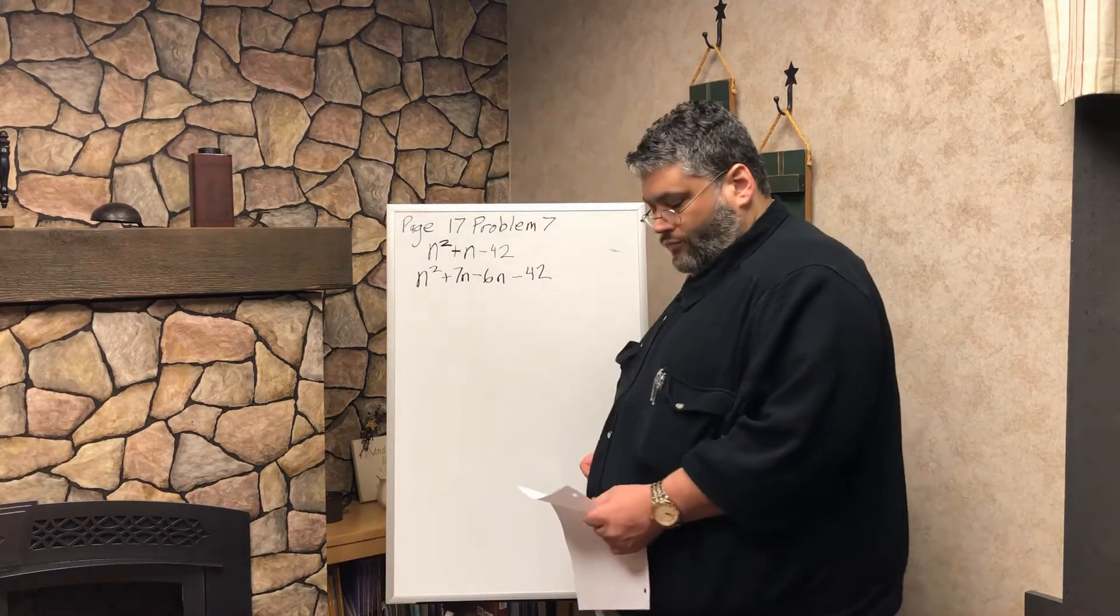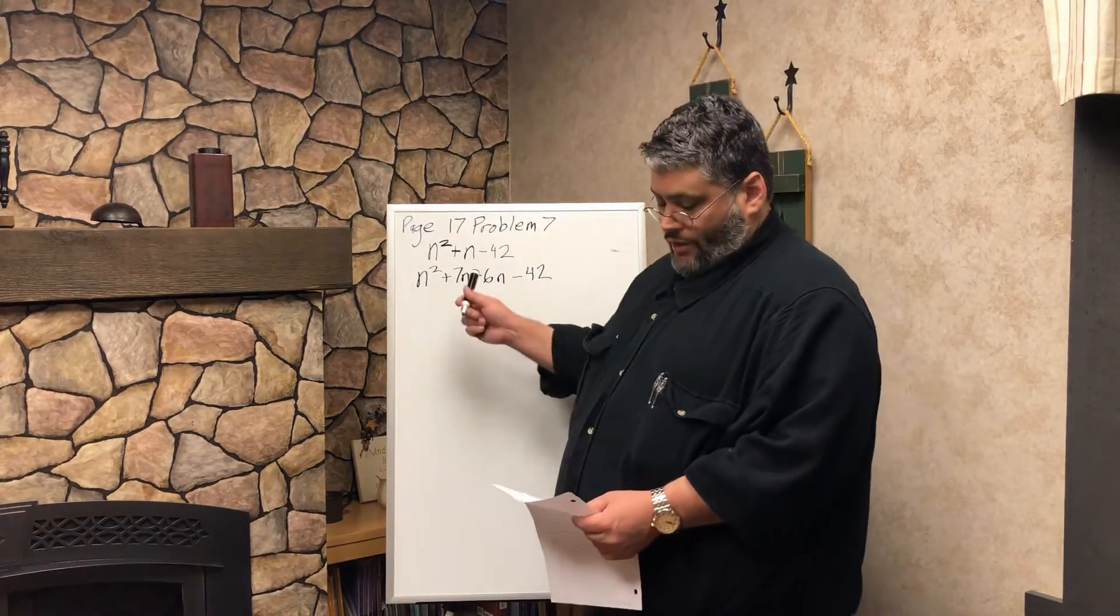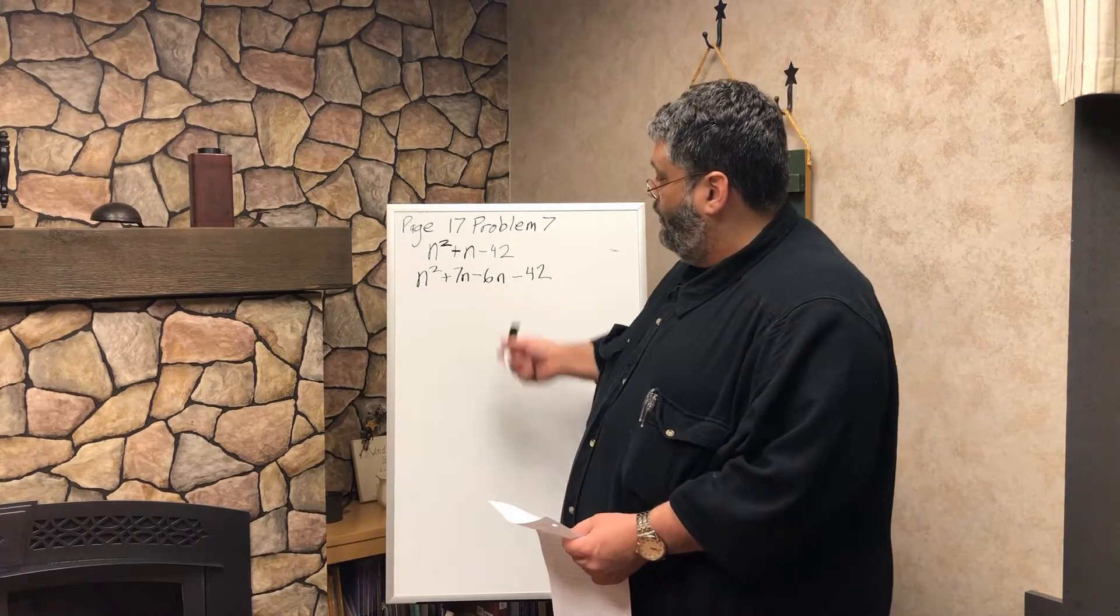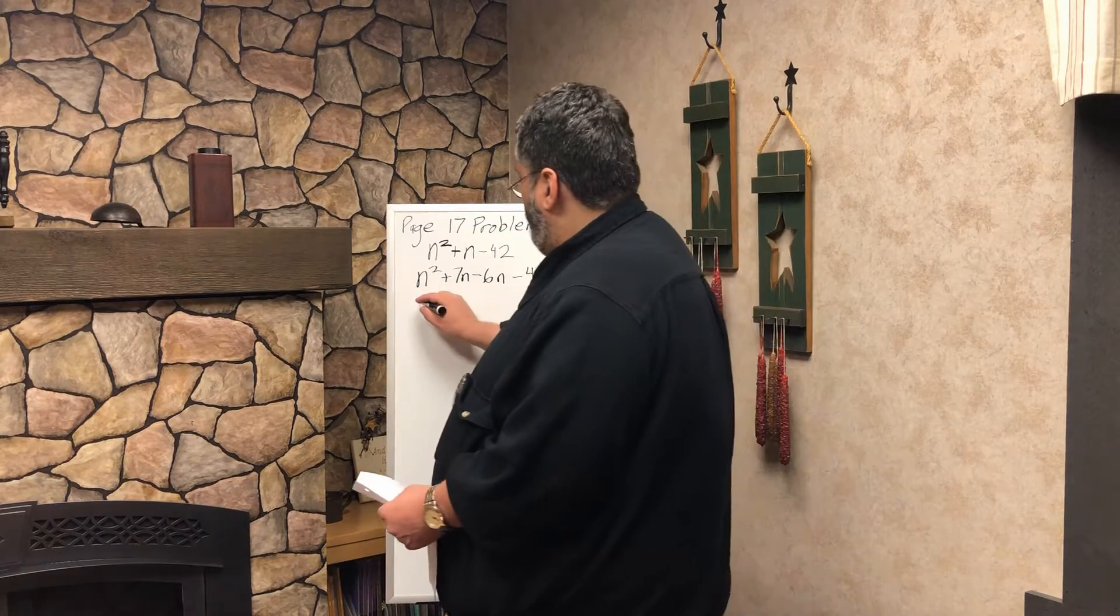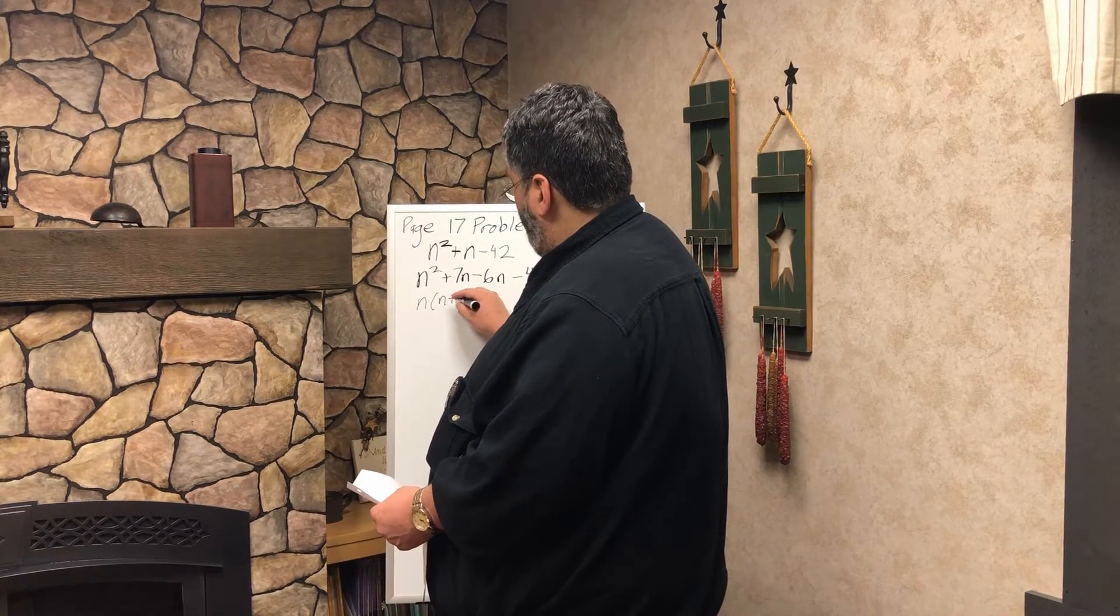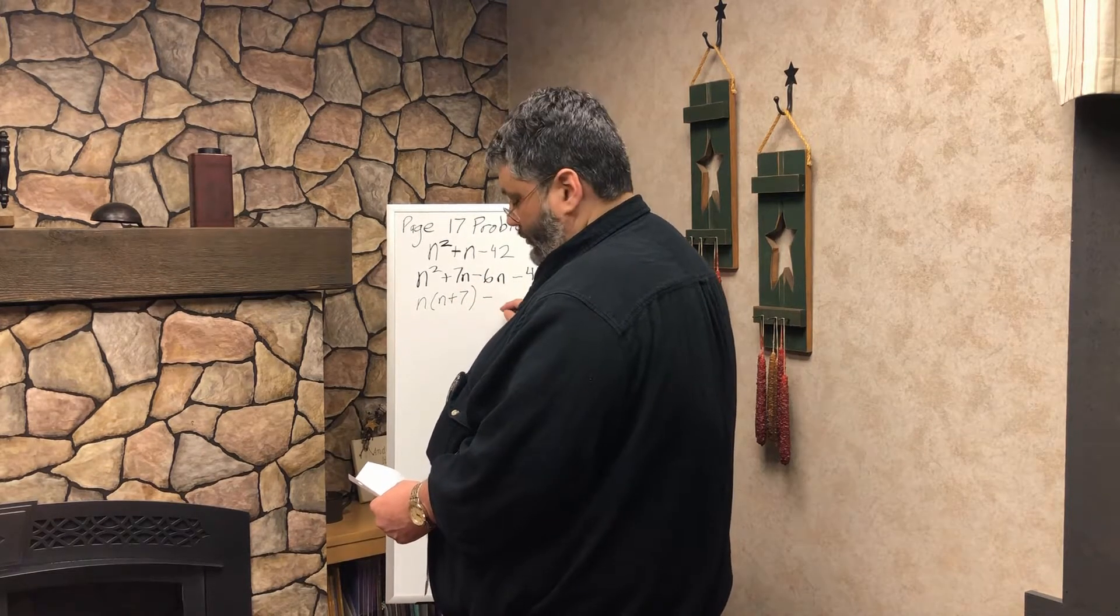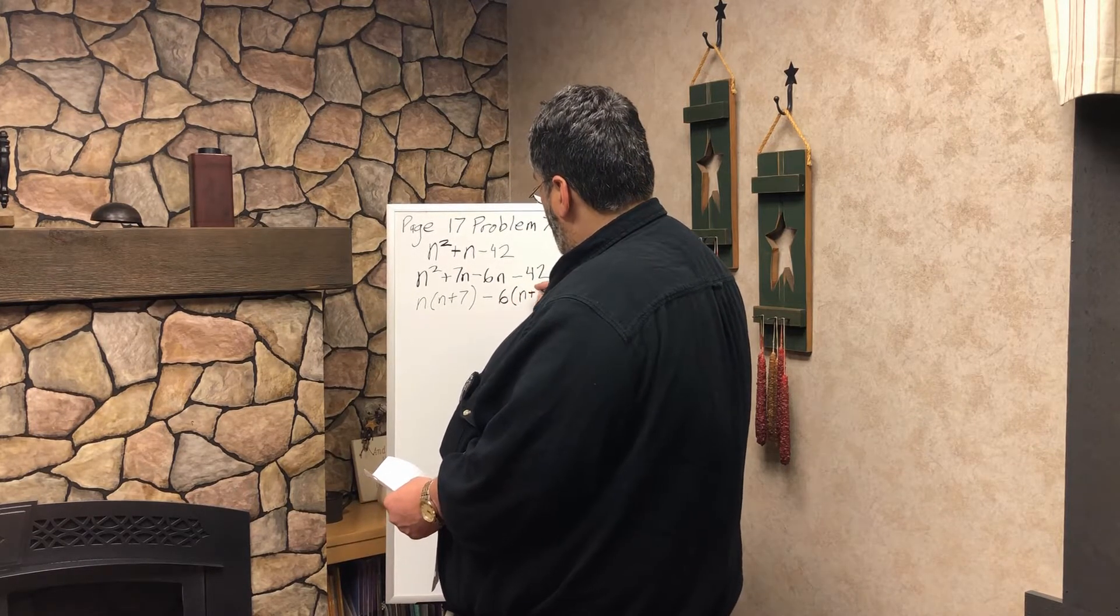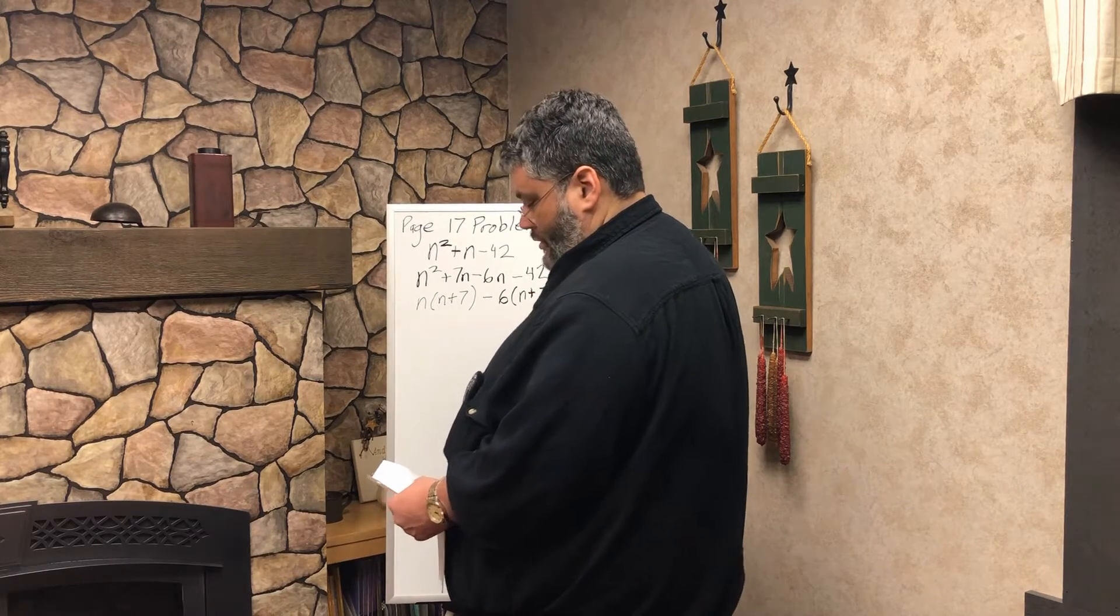So now what we're going to do here is we're going to take n out of here, and then we're going to take a 6 out of here, and we're going to see what we have left here. So we got n times (n plus 7), and then that is minus 6 times (n plus 7).